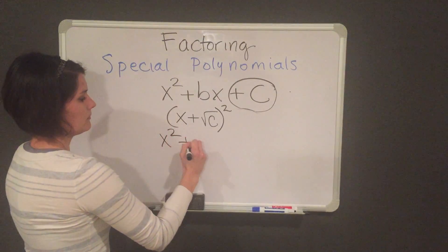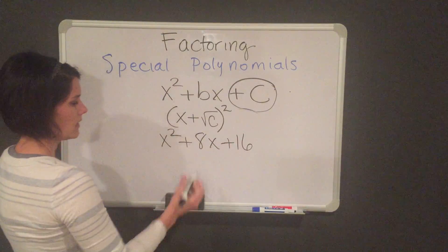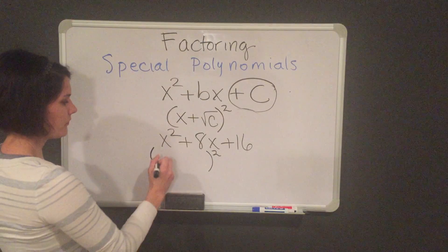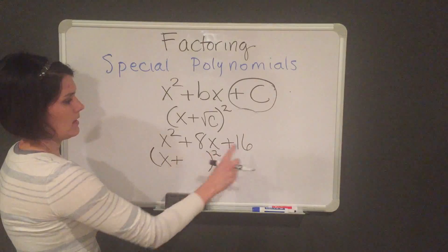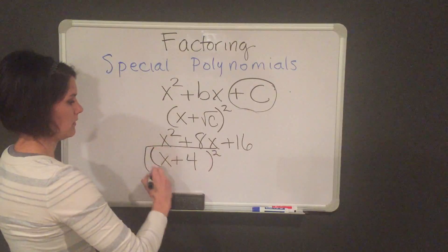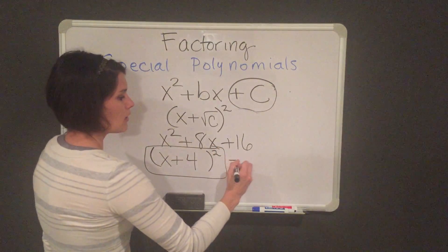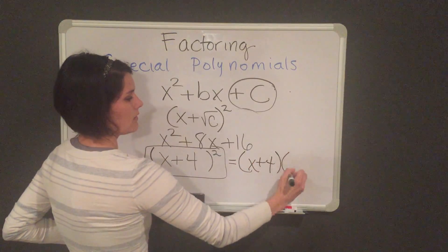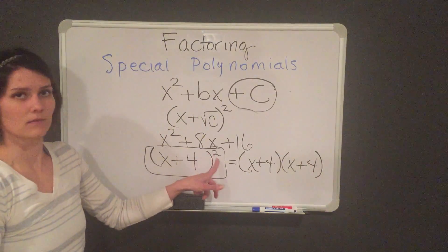So let's do the first example: x squared plus 8x plus 16. I'm going to open a parenthesis and put a square on top. I'll put an x here, copy down the plus sign, and then the square root of 16, which is 4, goes here. So the factors would be x plus 4 squared. You could also write it as x plus 4 times x plus 4, which is the same thing as x plus 4 squared.